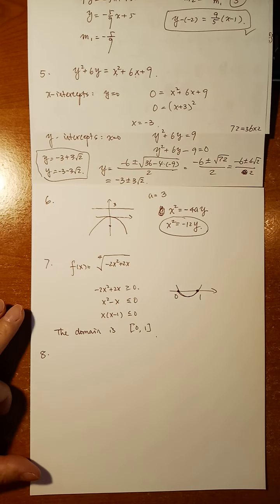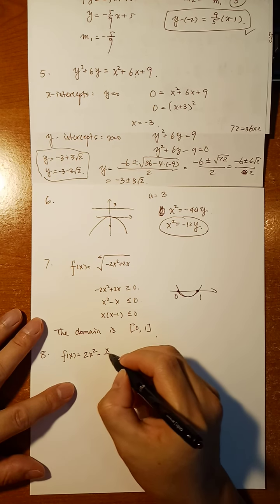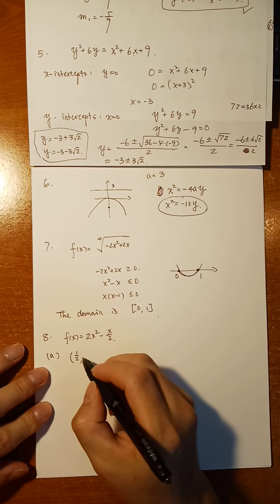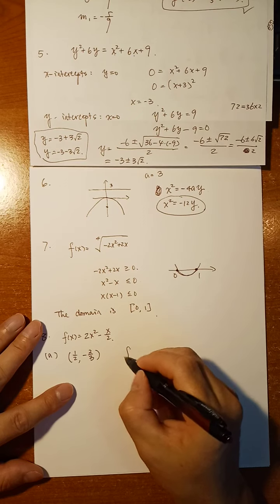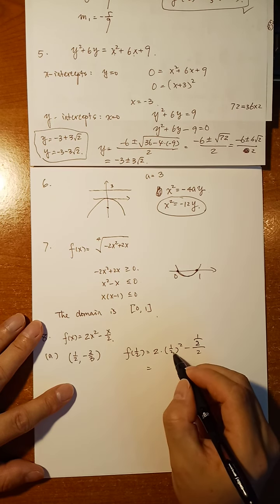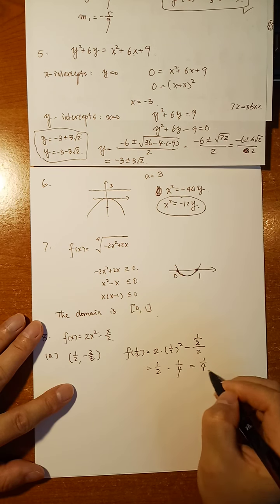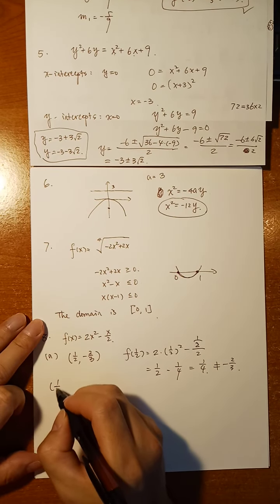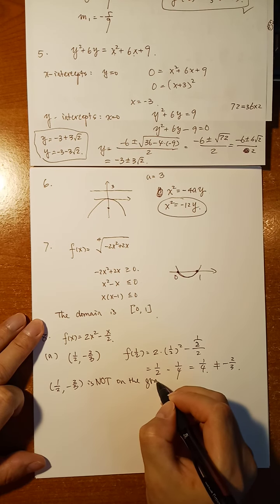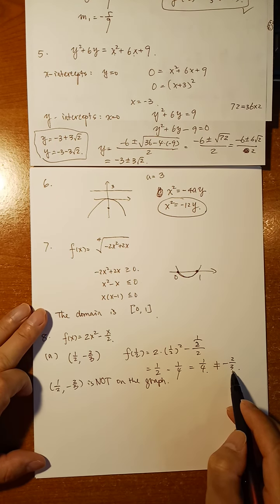Problem 8: the function is f(x) equals 2x squared minus x, over 2. Part a: is the point (1/2, negative 2/3) on the graph? Let's check. F of 1/2 equals 2 times (1/2) squared minus 1/2, over 2. That's 2 times 1/4, which is 1/2, minus 1/2, over 2, giving 0 over 2, which is... actually it's 1 over 4. Since 1/4 does not equal negative 2/3, the point (1/2, negative 2/3) is not on the graph. A point is on the graph if and only if f evaluated at the x-coordinate equals the y-coordinate.